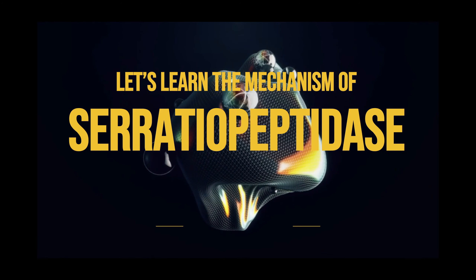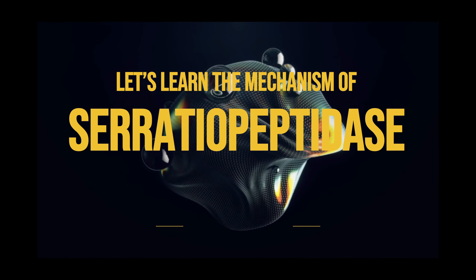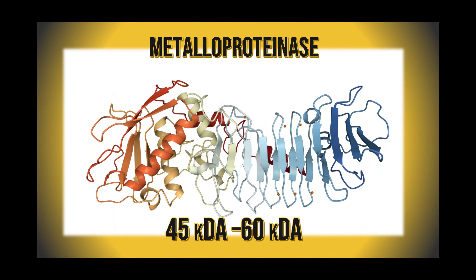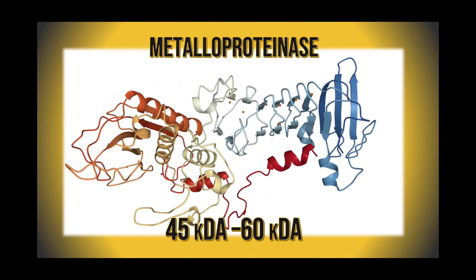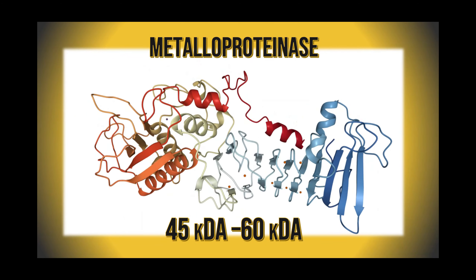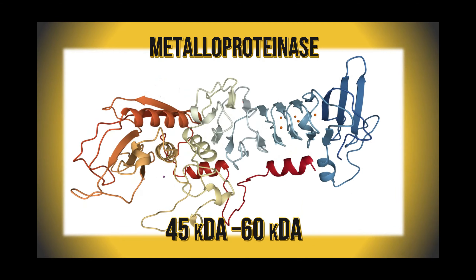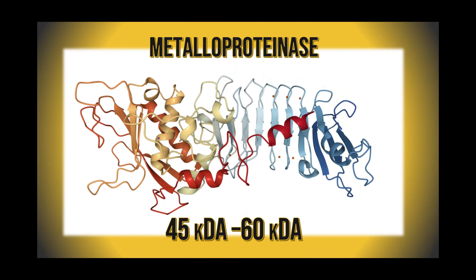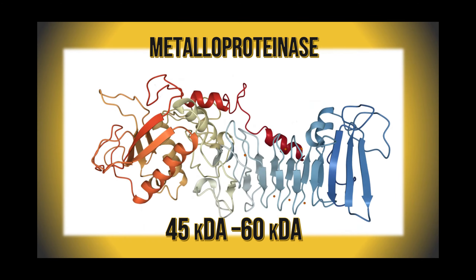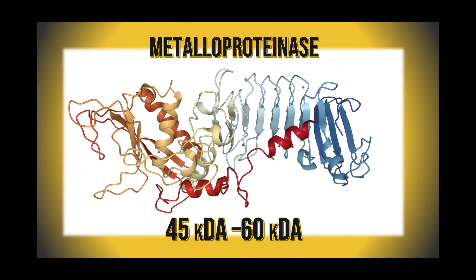Let's learn the mechanisms of serratiopeptidase. Before we understand the mechanism, we must know that serratiopeptidase is a metalloproteinase, which is a protease enzyme whose catalytic mechanism involves a metal. Its molecules range from 45,000 to 60,000 kDa and consist of 470 amino acids, which are important for its proteolytic activity.